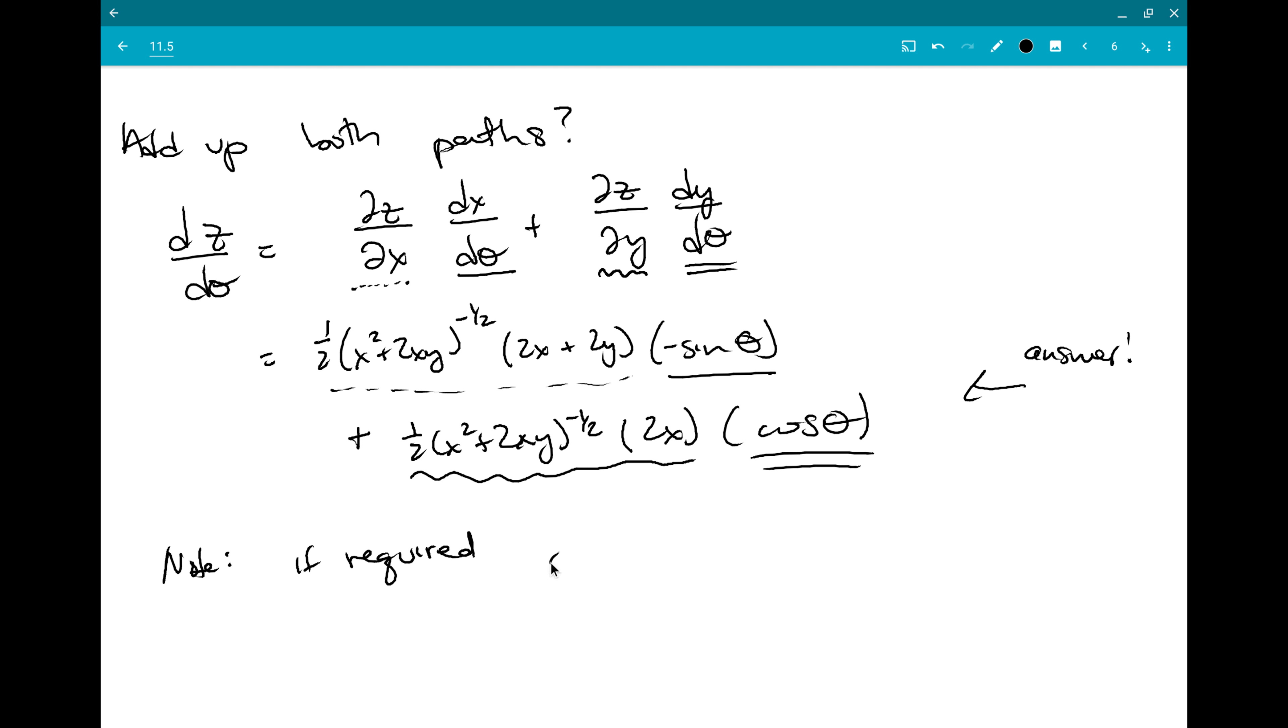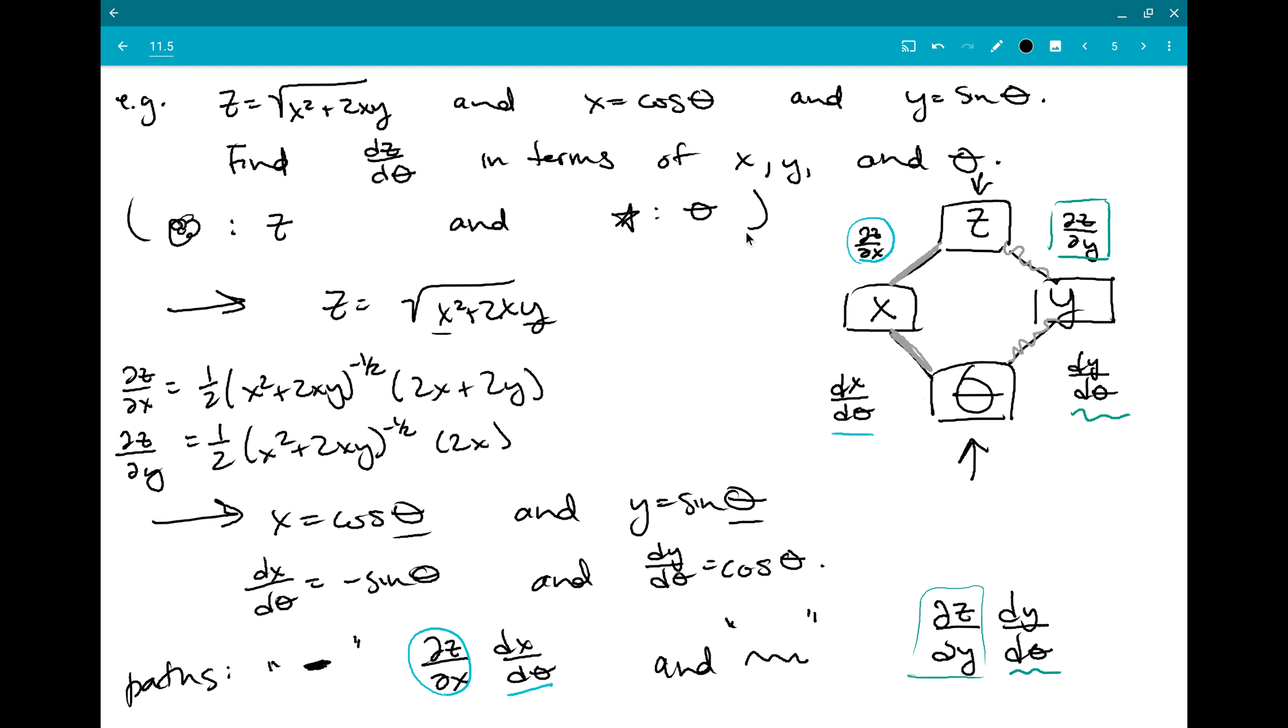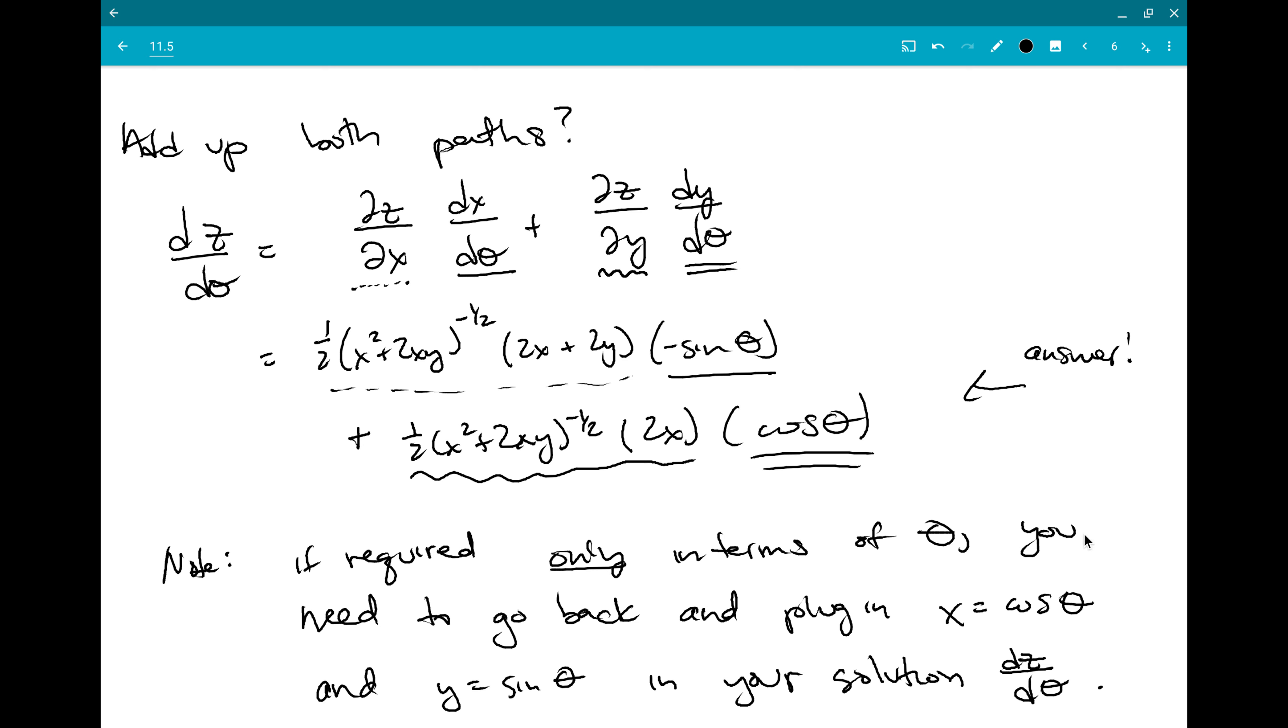The only warning I'll give you is if this had been required only in terms of theta, you need to go back and plug in x equals cosine theta and y equals sine theta in your solution dz d theta. And that wasn't required here but I just wanted to warn you that if you really want to see it kind of entirely in terms of theta that is the last step you have to take.